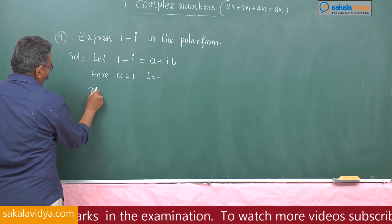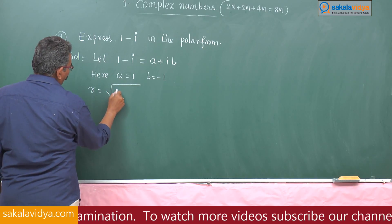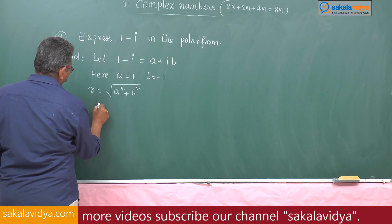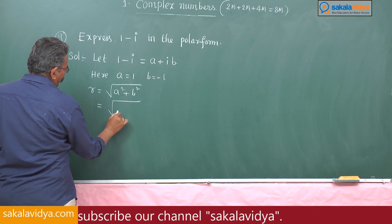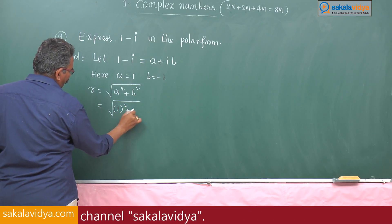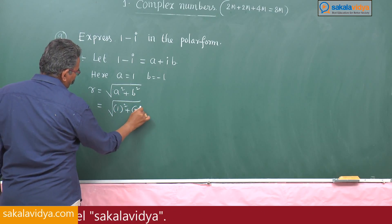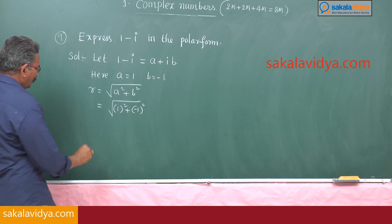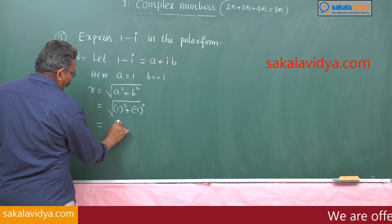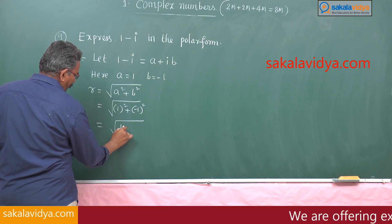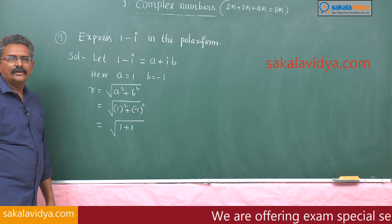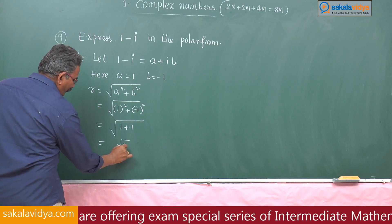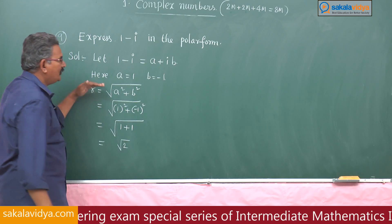Let us find out the r value: r equals root of a squared plus b squared, which is root of 1 squared plus minus 1 squared. This is root of 1 plus 1, so r is equal to root 2.